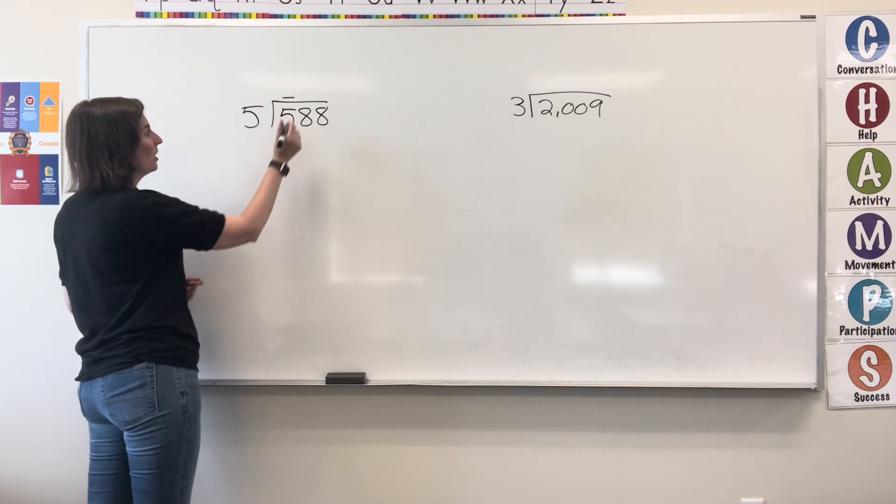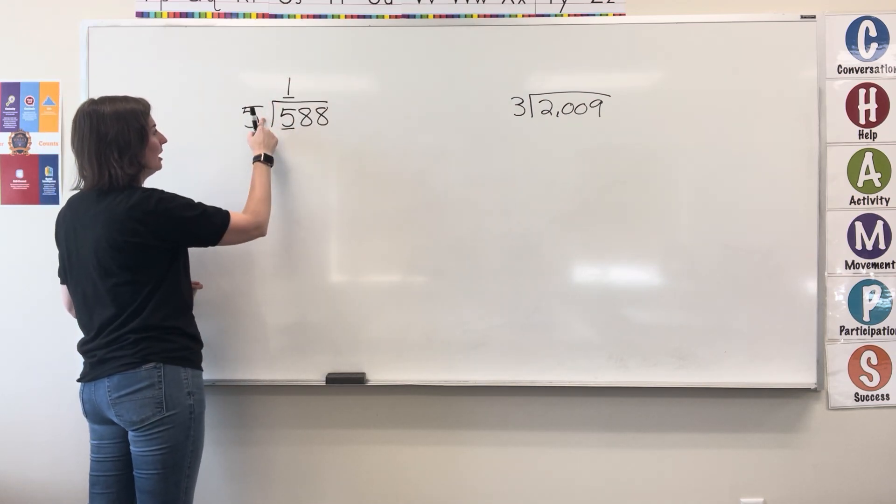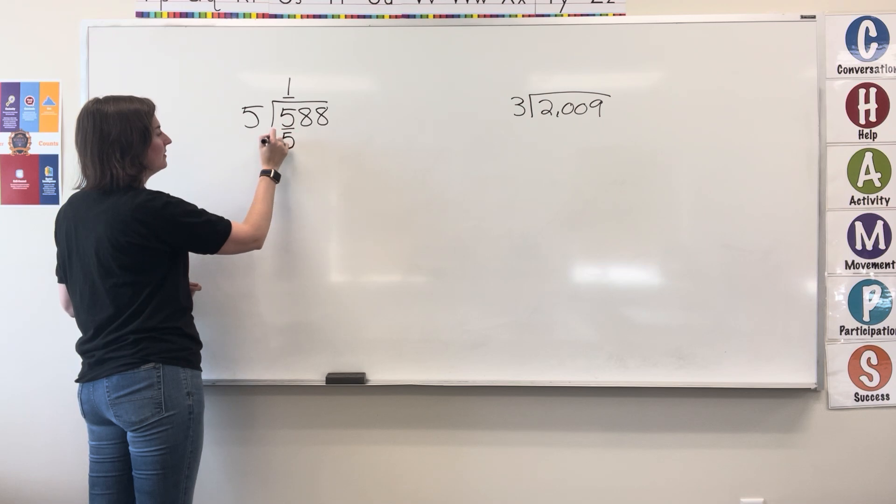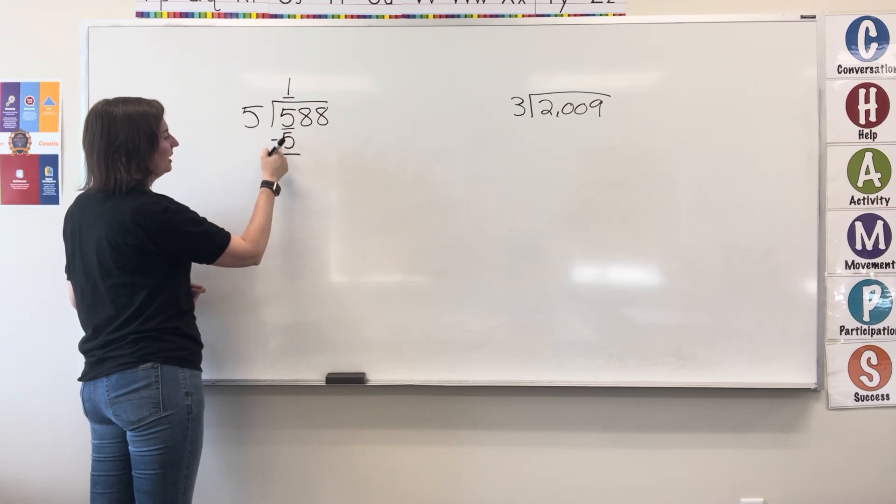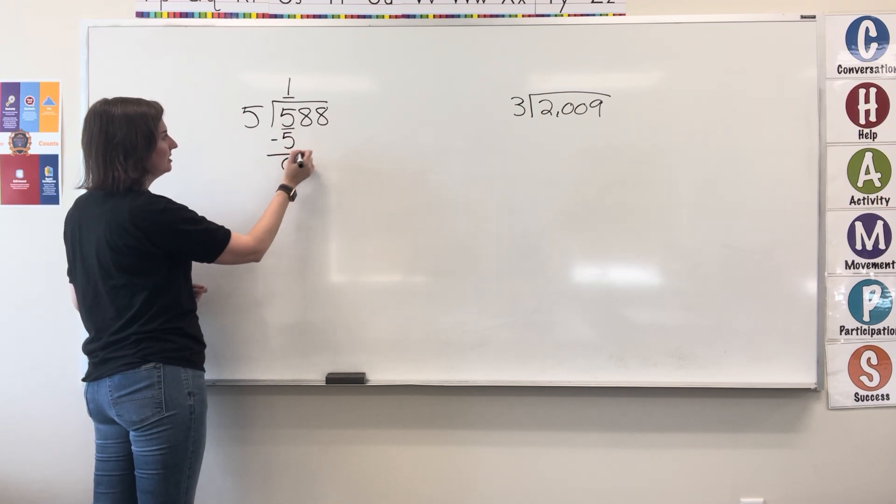5 fits into 5 one time. 1 times 5 equals 5. Write the 5. Now subtract. 5 minus 5 equals 0. Write the 0.